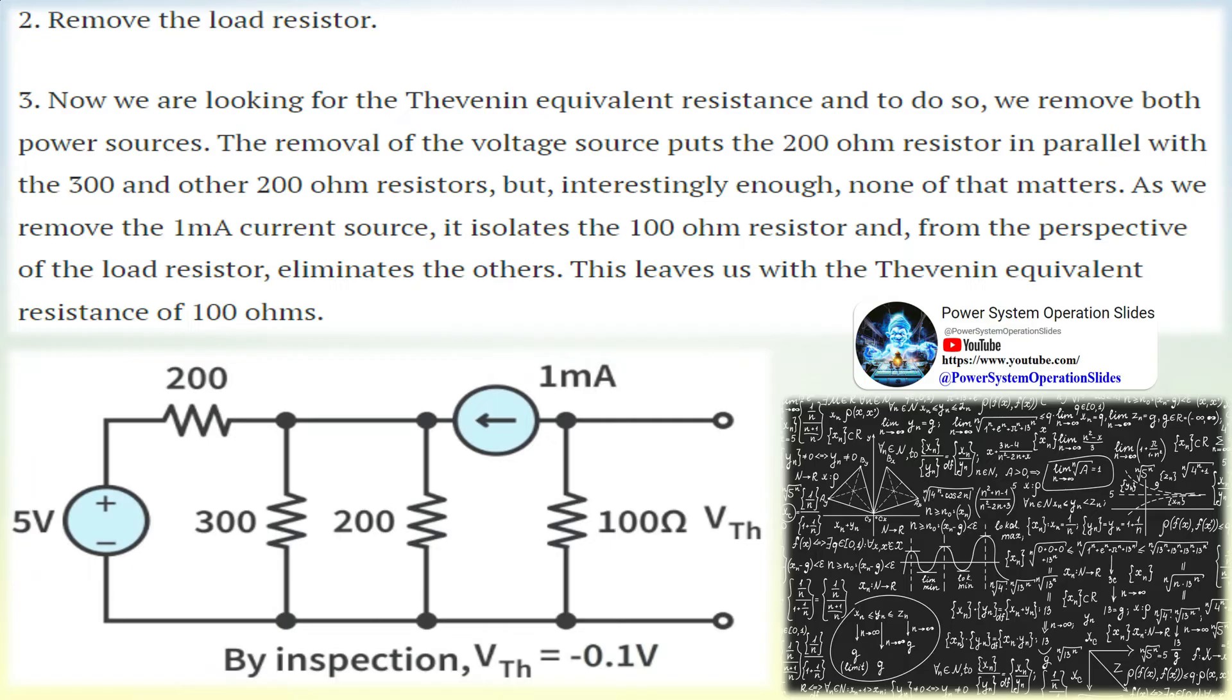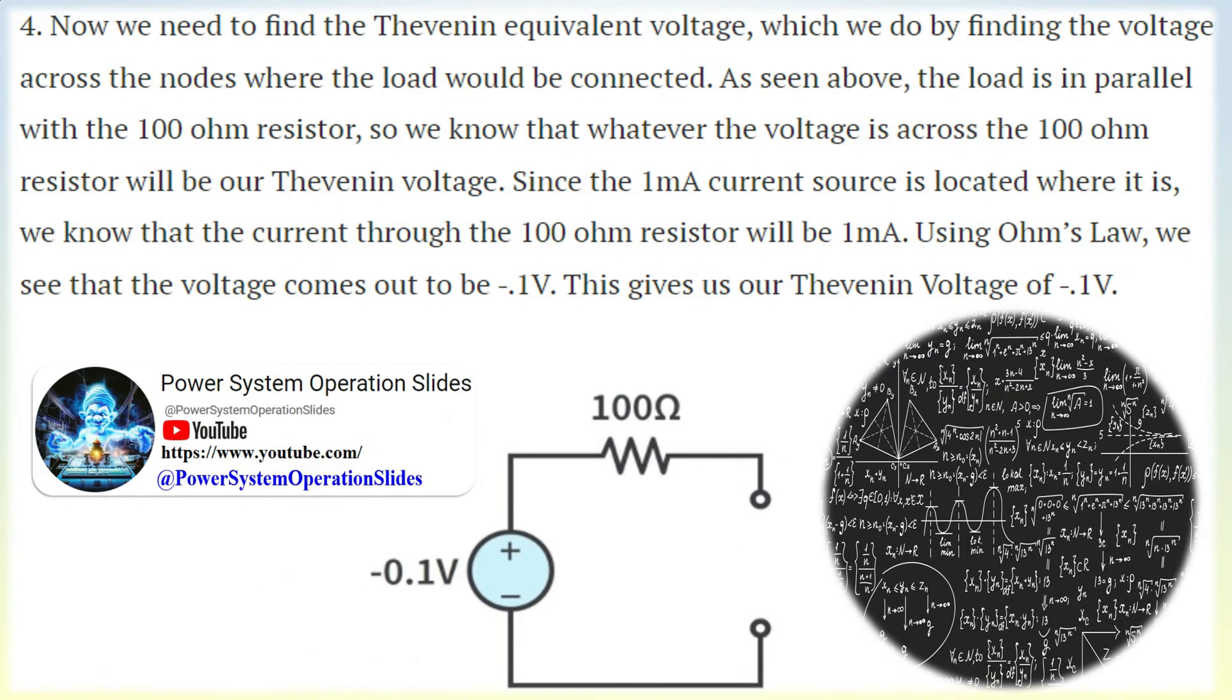If correctly derived, the Thevenin circuit will behave the exact same as the original circuit. The load across the two specified ports will not be able to tell the difference between the original network and the Thevenin equivalent circuit.